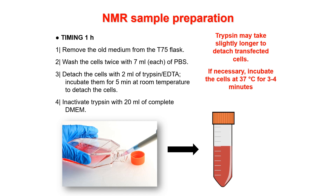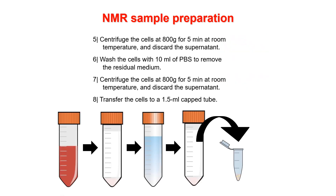Sometimes for transfected cells trypsin may take longer to detach the cells. If you observe this, you can incubate the cells at 37 degrees in the CO2 incubator for a few more minutes, and that should work to fully detach the cells. At this point you pipette 20 mL of complete DMEM medium, which is needed to inactivate the trypsin, which otherwise would harm your cells. Then you collect the cells with a serological pipette and put them in a 50 mL falcon tube.